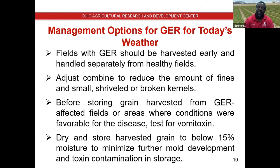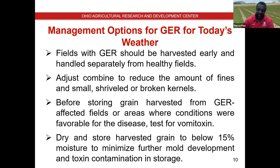All of these recommendations are contrary to normal harvest practice. Harvesting early means higher moisture content and drying costs. Adjusting the combine to blow out fines can slow harvest and result in healthy kernels being lost. There's also a cost associated with test kits. So these recommendations help reduce vomitoxin, but there are real costs associated with drying, testing, and altered harvest operations.